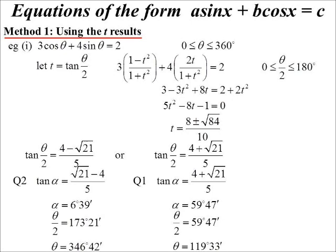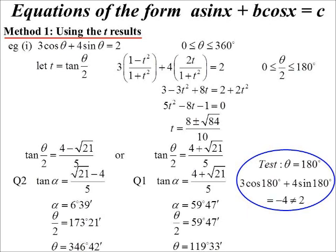Now, the thing with the t results: if 180 degrees is a solution, the t results won't find it. Why? Because we've defined t to be tan theta over 2. If theta is 180, then it's tan 90 which is undefined. So you always need to check, is 180 a possibility? And when you think about it, all you've really got to check is the cosine, because sine 180 is always zero. Cos of 180 is negative one, times 3 is negative 3, not equal to 2, so 180 is not a solution to this one. So there's our two answers using t results.